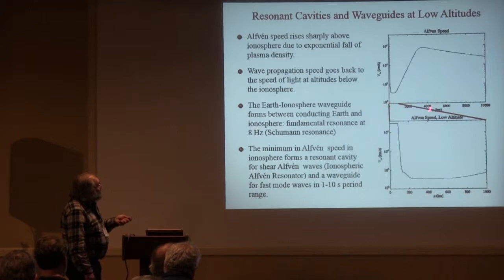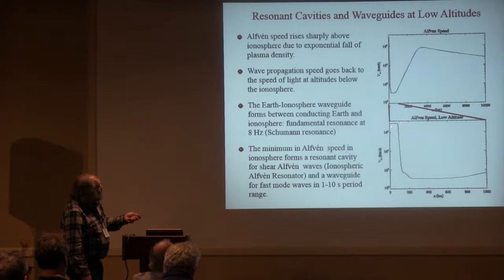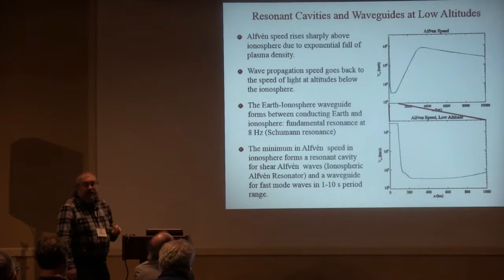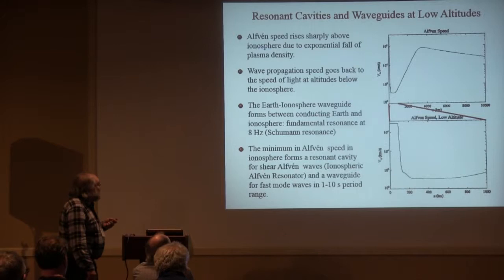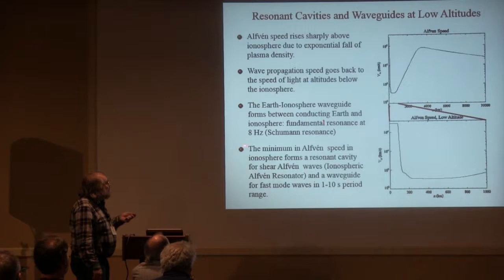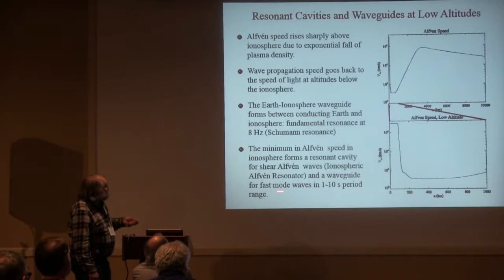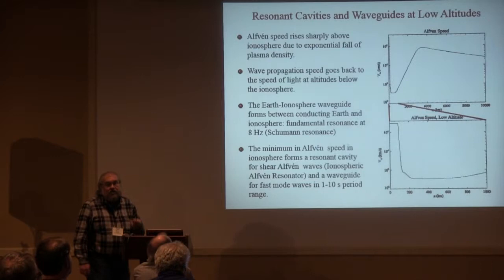Below the ionosphere, the plasma basically goes away. Here's the lowest 1,000 kilometers of the field line; this one goes up to 10,000 kilometers. The effective wave speed goes right up to the speed of light in the atmosphere. There's also the Earth-ionosphere waveguide — people call it different things — that has a fundamental resonance at 8 Hz, known as the Schumann resonance. The IAR has a characteristic period of a few seconds, or frequencies of a fraction of a hertz, up to about the Schumann resonance point.